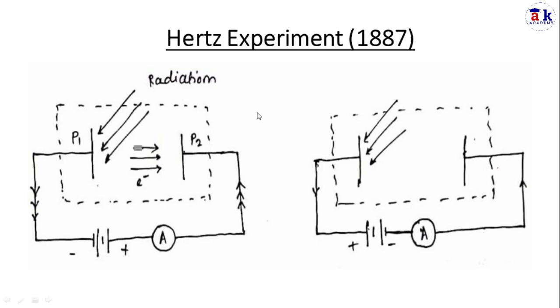You can see the photoelectric effect in this schematic diagram of the experimental setup. Here is plate P1 and plate P2. Plate P2 is at positive potential and the current flows through an ammeter to measure the current. This plate is illuminated by radiation of some particular frequency.